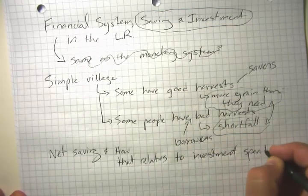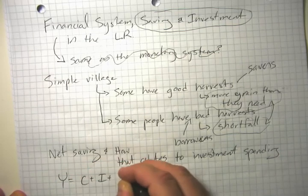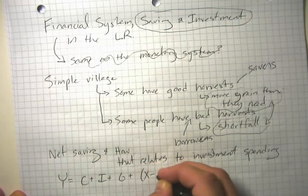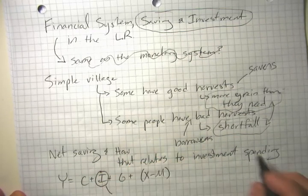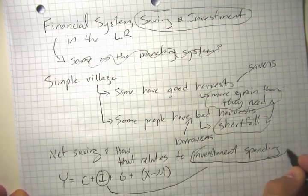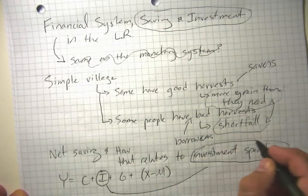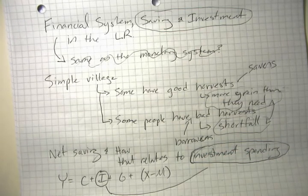And remember, we have this GDP accounting equation, Y equals C plus I plus G plus exports minus imports. And we have investment spending. Investment spending is spending on real goods and services that are going to increase the economy's productive capacity.